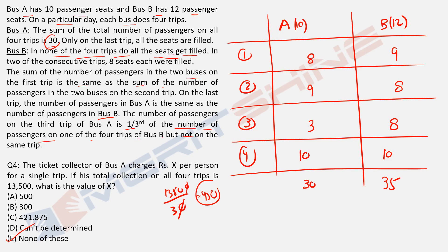An important tip: when you cannot crack a question like this, a quick look at the individual questions can sometimes let you answer one or two directly. For example, Question 4 just needed the total passengers from Bus A, which was given as 30 right in the problem statement. Keep your eyes open — these simple things make your task easier.